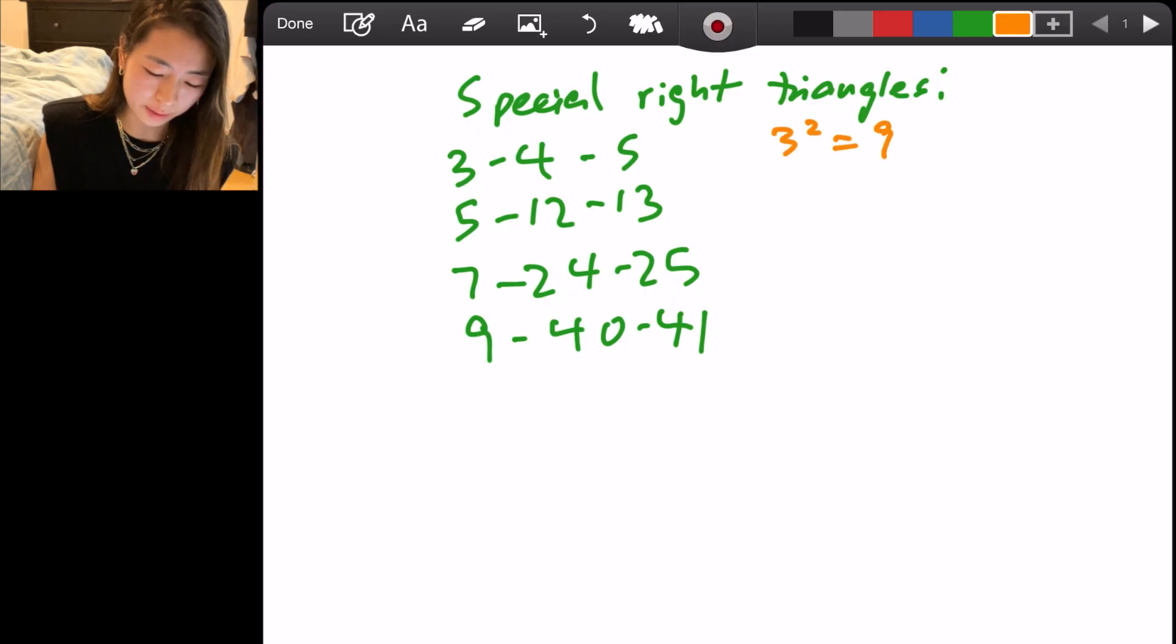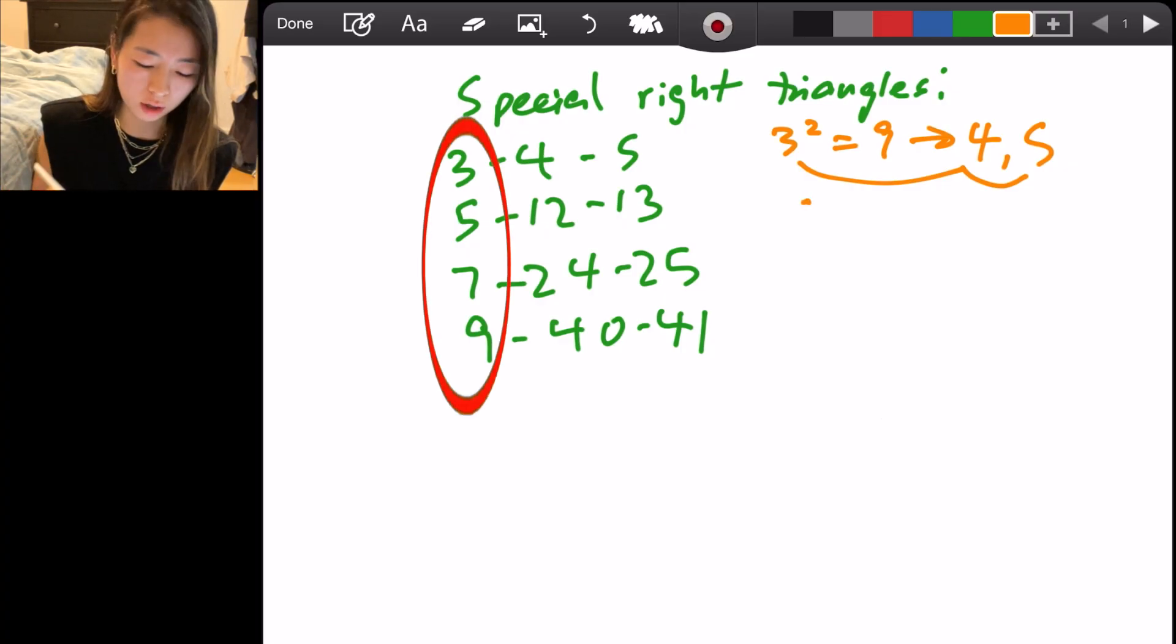We can square it and that becomes 9. 9, if we split it in half, it's 4.5, but we choose integers on either side. So that's 4 and 5. 4 plus 5 equals 9, so we have 3, 4, 5 triangle. We can see this holds true for all of these other ones where the shortest side length is an odd number.